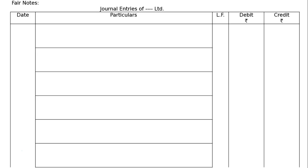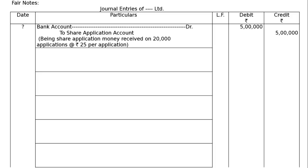Journal entries of Dash Dash Limited. First entry: on 20,000 applications, bank account debited to share application account. Being share application money received on 20,000 applications at the rate of Rs.25 per application. 20,000 × 25 = Rs.5 lakh, both debit and credit.